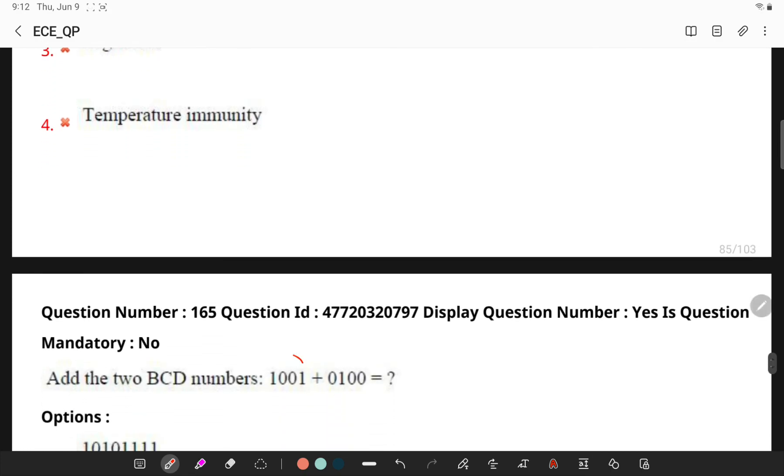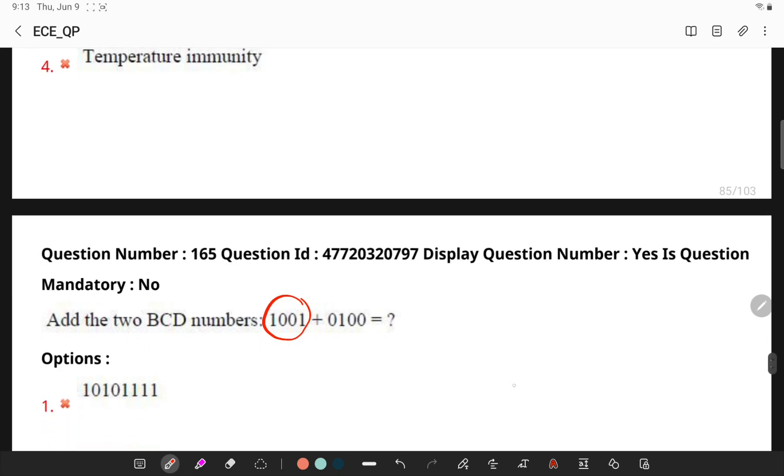Now, add the BCD numbers 1001 and 0100. So, firstly, you will be adding, we get 1001 and 0100, 101101. But, this is not a BCD form, so we have to add another 6.